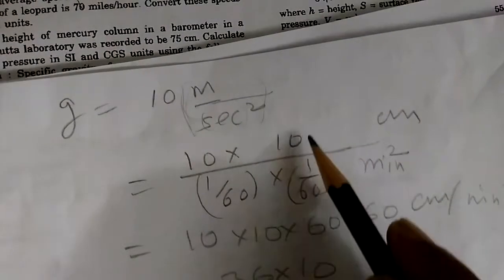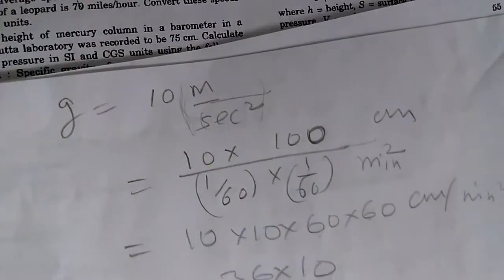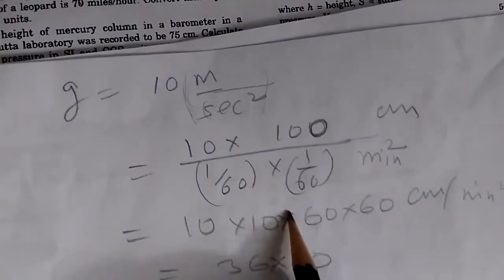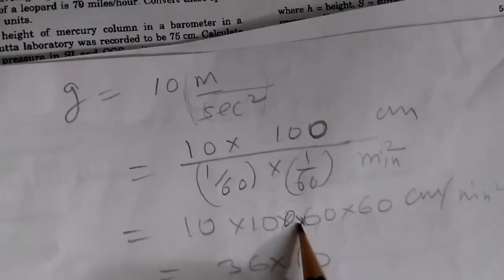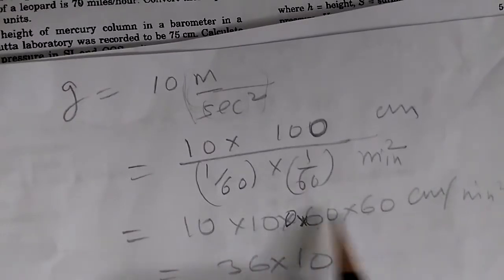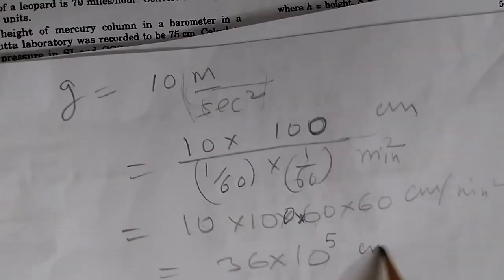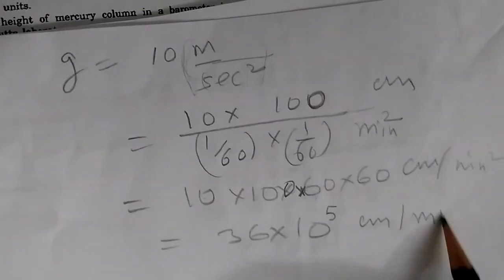1 meter is 100 centimeter. So this becomes 10 into 100 into 60 into 60. So 10 to the power of 1, 2, 3, 4, 5 - 10 to the power of 5 centimeter per minute square.